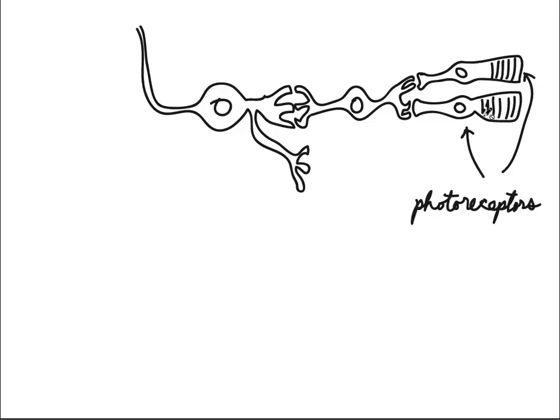Here in the back we have what are called the photoreceptors. These are actually the cells that sense light and will convert the light into a neural signal. We'll discuss that process which is called transduction in a later video.